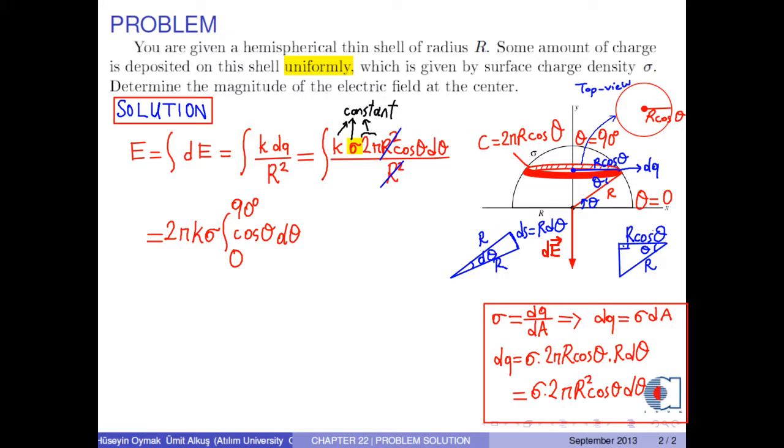The integral of cosine theta is sine theta. So, we get 2 pi k times sigma times sine theta between 0 and 90 degrees.